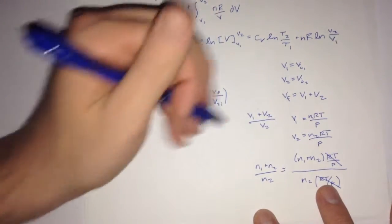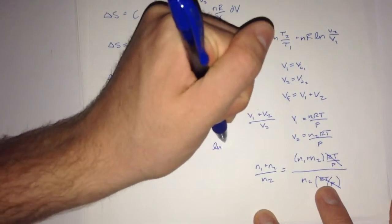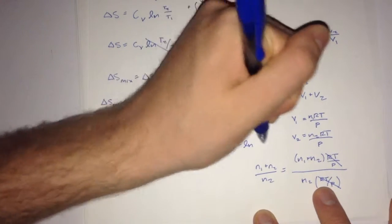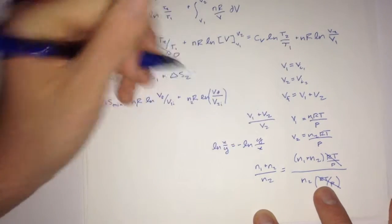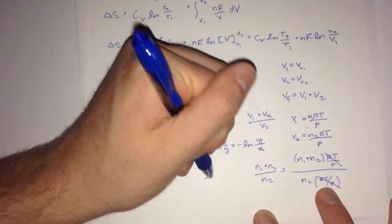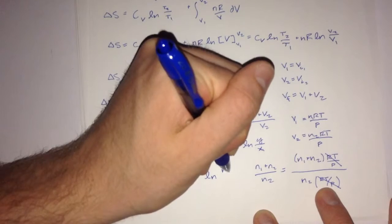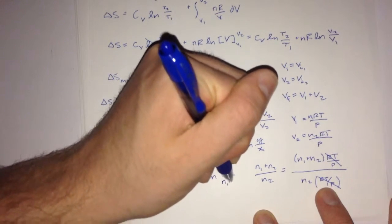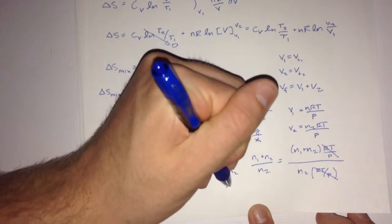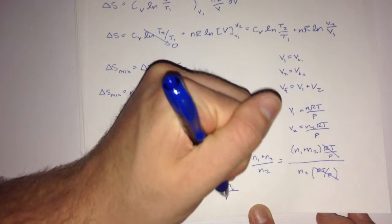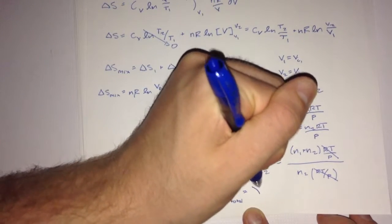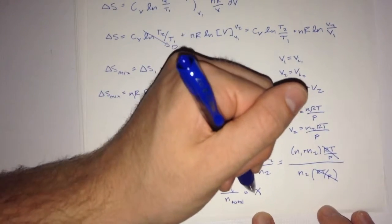However, through the rules of logs, writing ln of x over y is the same thing as writing the negative ln y over x. So performing that will be left with the ln of n2 over n1 plus n2. Also, we notice that's the same thing as writing a mole fraction, which is the number of moles of an individual species all over the total number of moles. And that's abbreviated with chi.